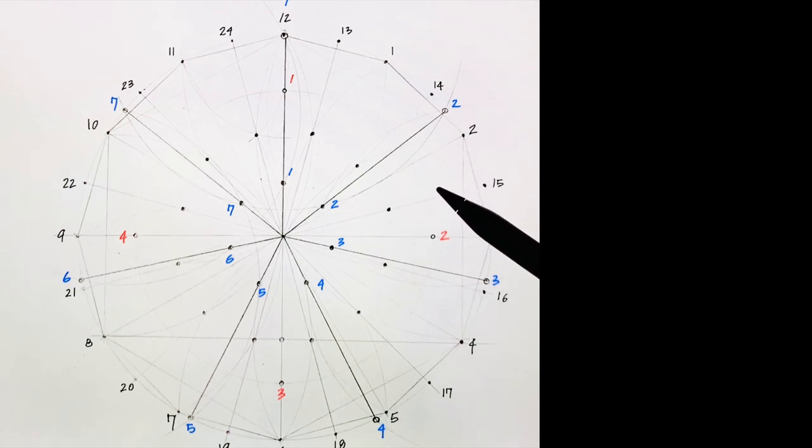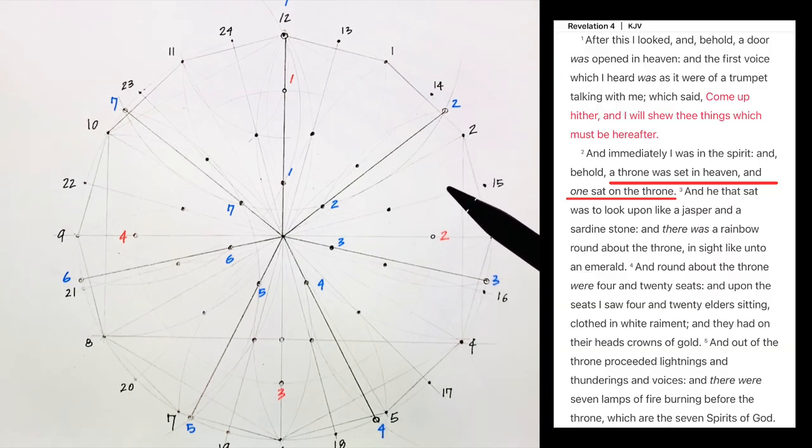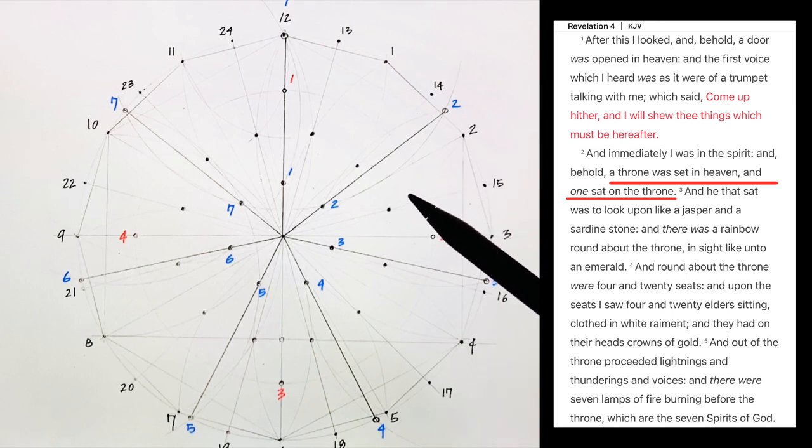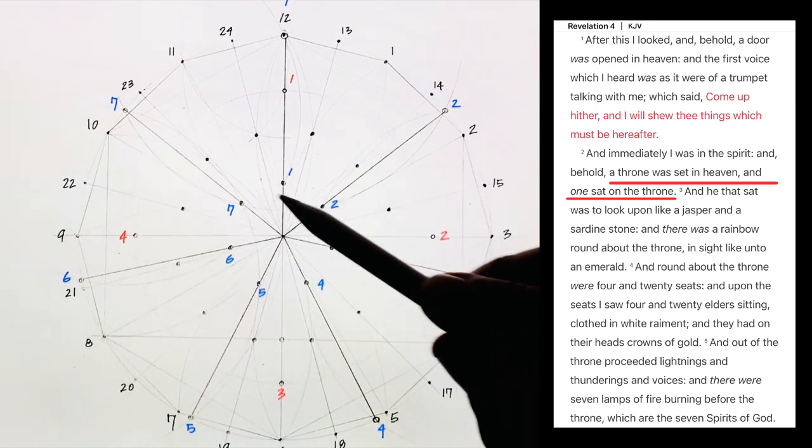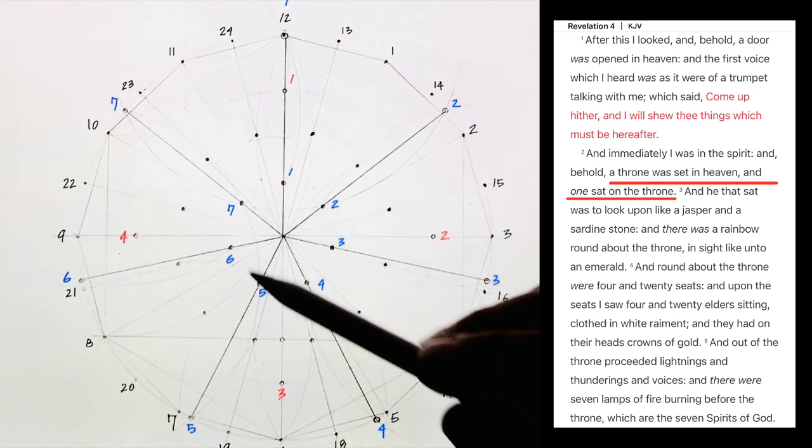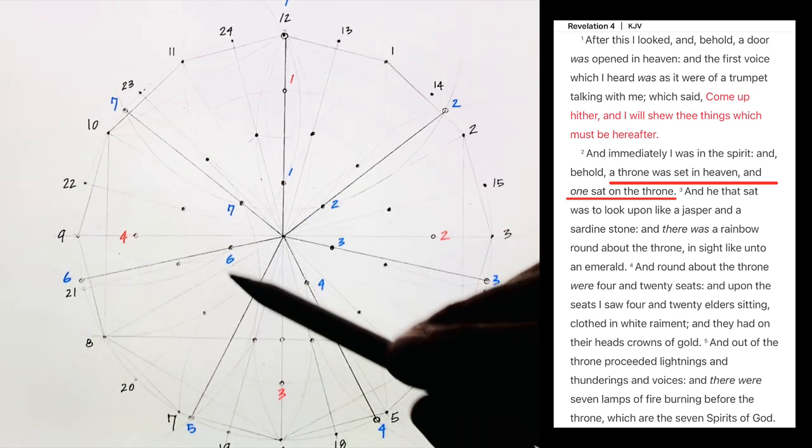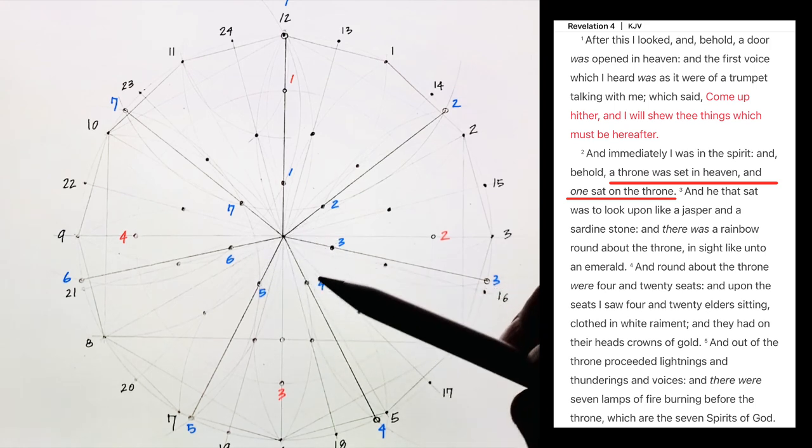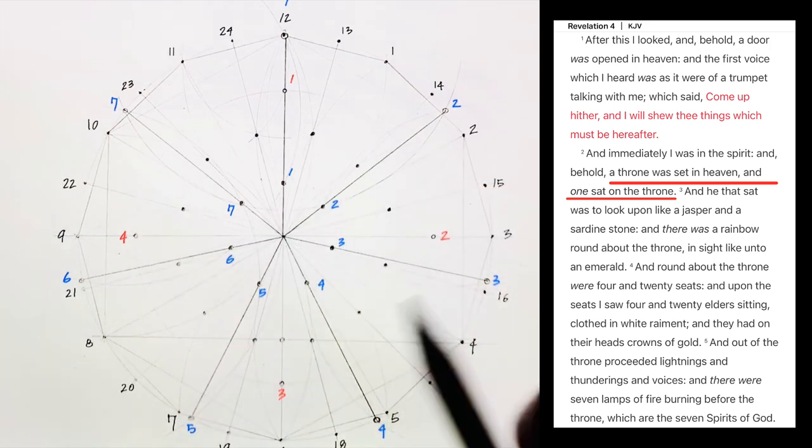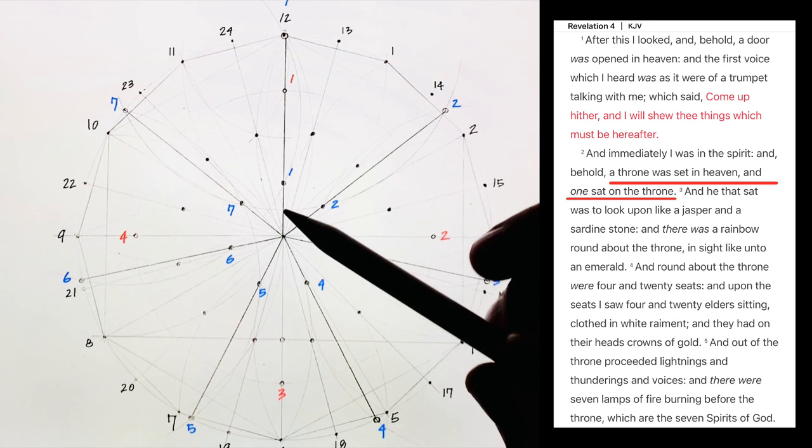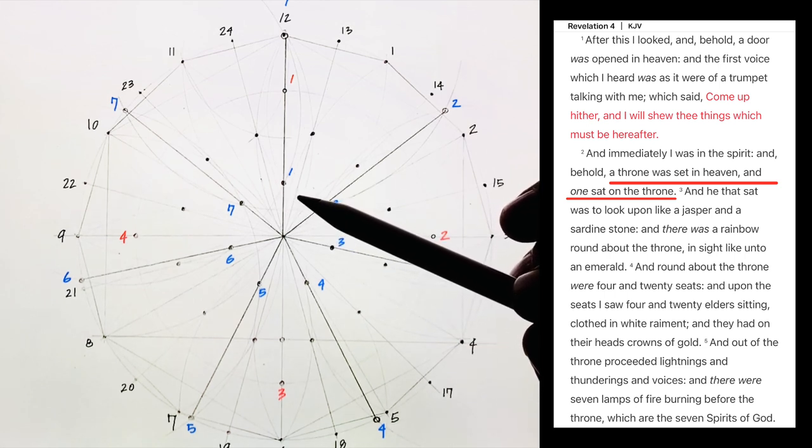Now we're going to go to Revelation 4, verse 2. In the meantime, in Revelation, we talked about the seven churches. These seven candlesticks represent the seven churches, which are in the book of Revelation. That's critical, because we're talking about end times. Revelation 4, verse 2, it says...